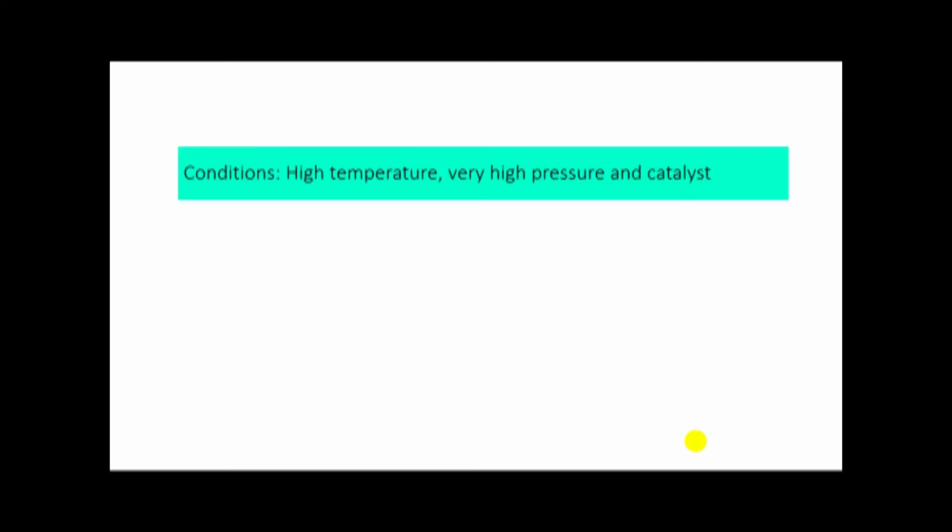Conditions: high temperature, very high pressure, and catalyst. The mass of monomers equals the mass of polymer. No other product is produced and nothing is eliminated, so the same mass. For example, 20 kg of polyethene you will get from 20 kg of ethene. Nothing is lost.